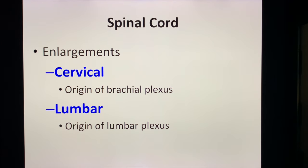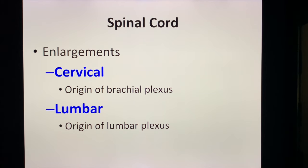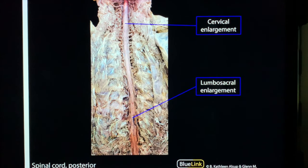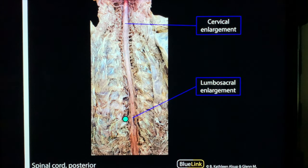The spinal cord also has two enlargements: these are the cervical and the lumbar enlargement. The cervical enlargement is where the brachial plexus originates, at the level of C5 to C6 — that would be the upper brachial plexus. The lumbar enlargement is the origin of the lumbar plexus. Here is a gross picture showing the cervical enlargement at roughly C5–C6, where the brachial plexus originates, and the lumbosacral enlargement below, where the lumbar plexus also originates.